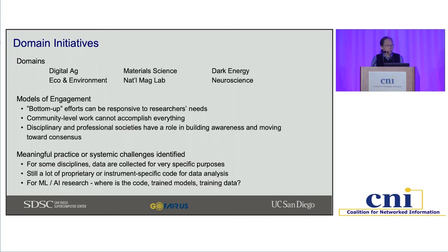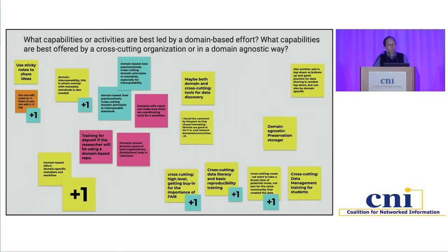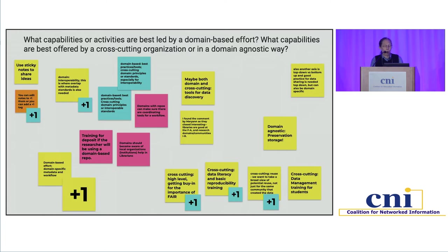Finally, in machine learning and AI-based research, there are fundamental problems with finding the code, trained models, and training data. We used Jamboard and sticky notes to gather input, looking for ways that people were tallying up items that were important and getting votes — that was one of the ways we gathered community feedback.